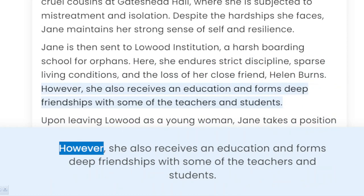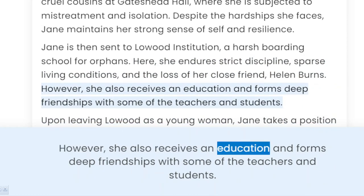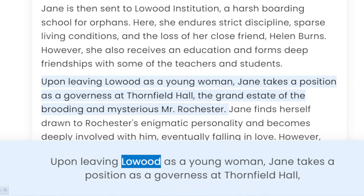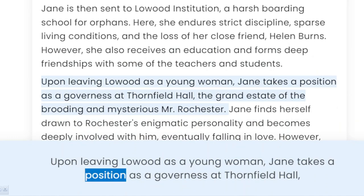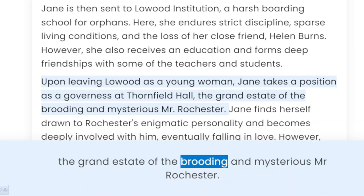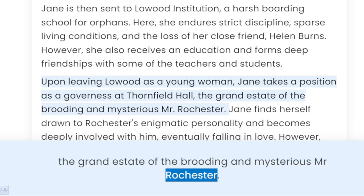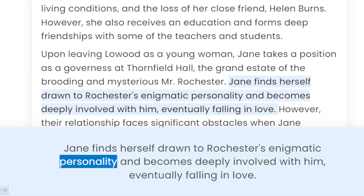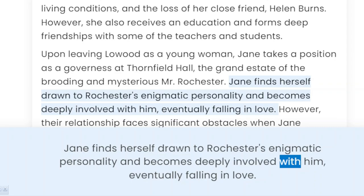However, she also receives an education and forms deep friendships with some of the teachers and students. Upon leaving Lowood as a young woman, Jane takes a position as a governess at Thornfield Hall, the grand estate of the brooding and mysterious Mr. Rochester. Jane finds herself drawn to Rochester's enigmatic personality and becomes deeply involved with him, eventually falling in love.